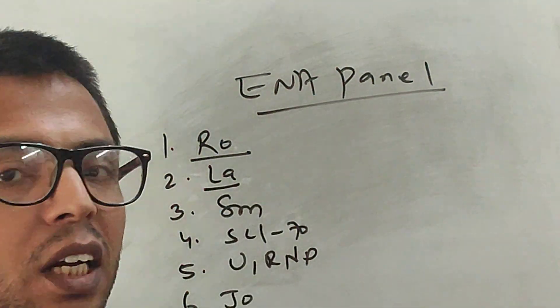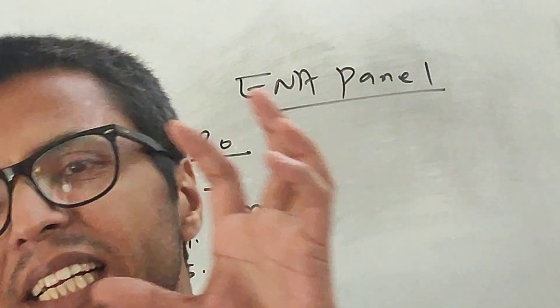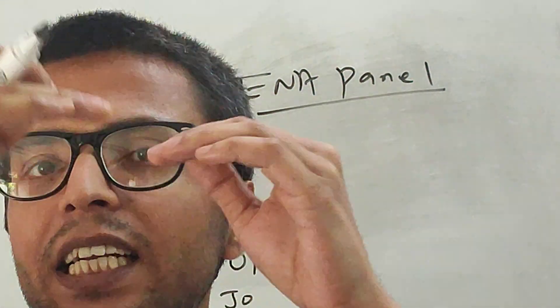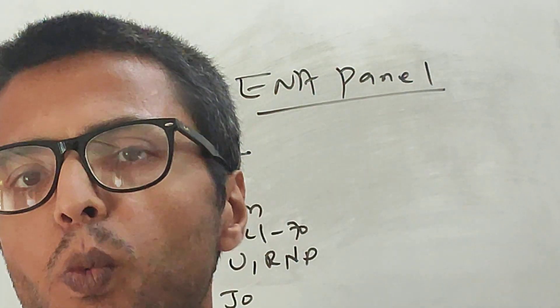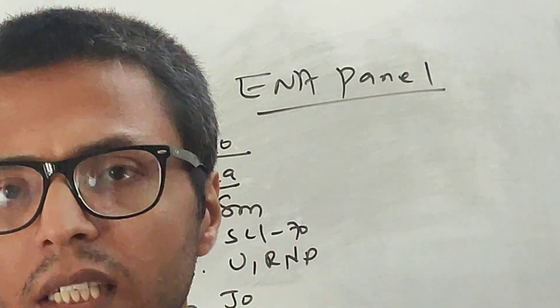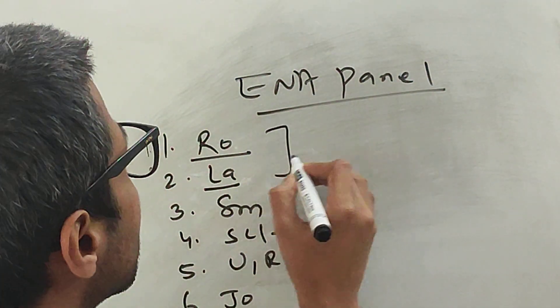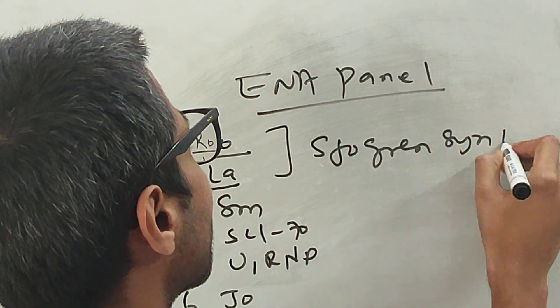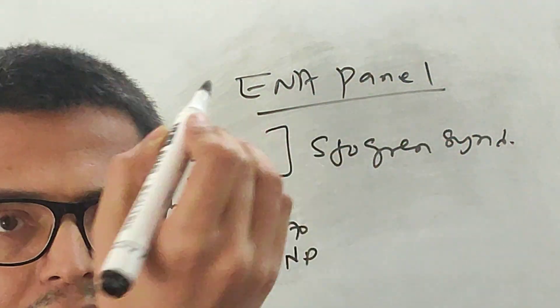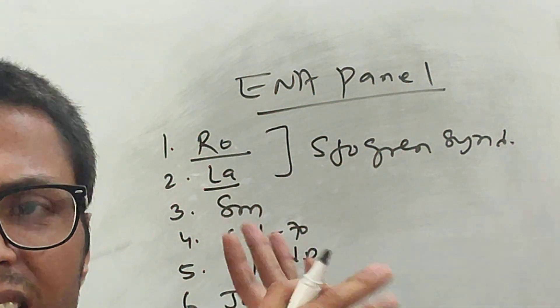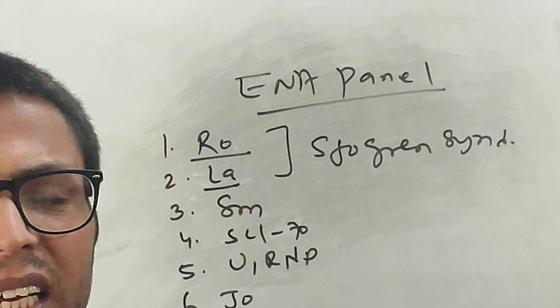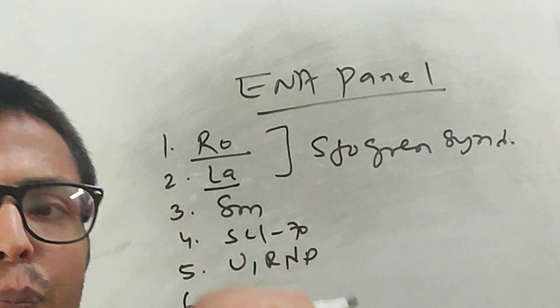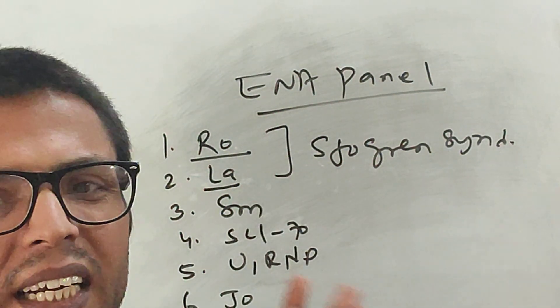If you get one antibody positive like Ro positive or La positive, it does not specifically indicate this disease. But if there is a high titer of some antibody, it points more towards certain diseases. Like if you get Ro or La antibody, it suggests more towards Sjögren's syndrome. If high titer, it can be seen in other diseases like SLE, rheumatoid arthritis.